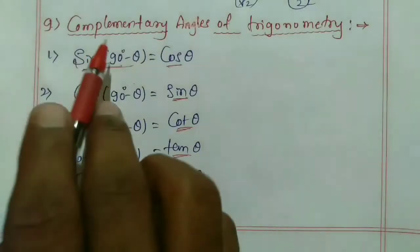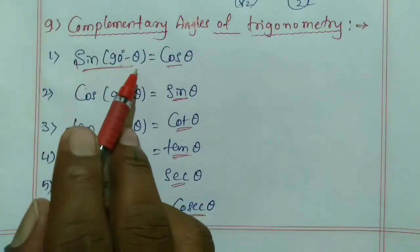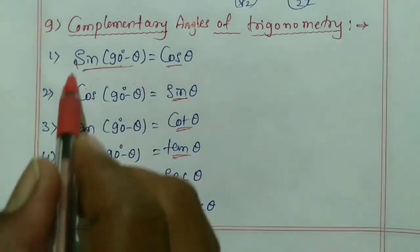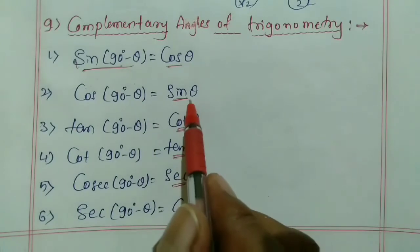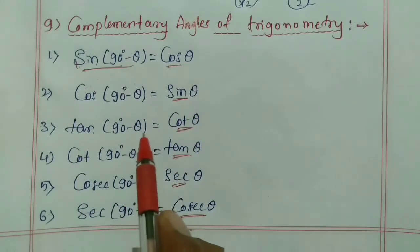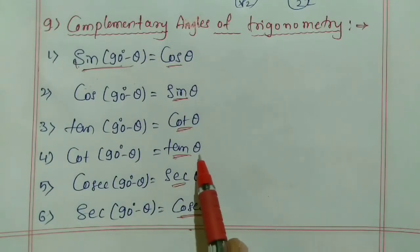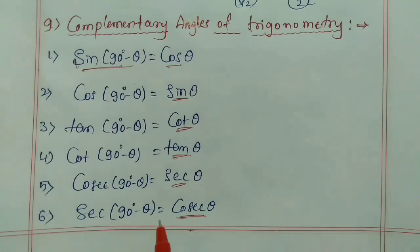For complementary angles of trigonometry: sin(90° − θ) = cos θ and cos(90° − θ) = sin θ. Similarly, cosecant(90° − θ) = secant θ, and secant(90° − θ) = cosecant θ. These complementary angle relationships are important to remember. Thanks for watching.